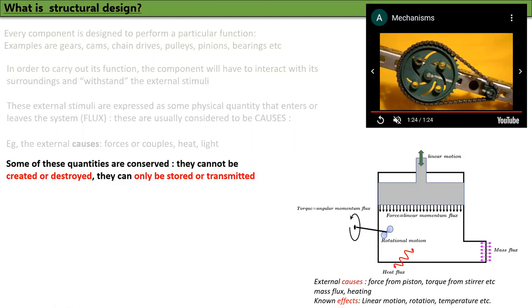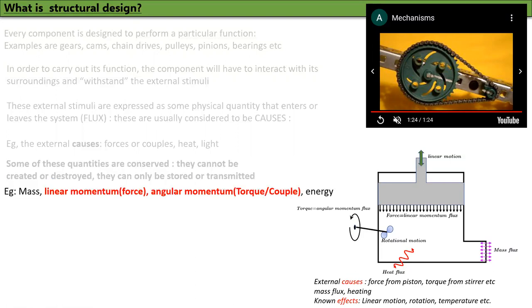Some of these quantities are conserved. They cannot be created or destroyed. They can only be stored or transmitted. Examples of conserved quantities are mass, linear momentum which gets translated into forces, angular momentum which is usually referred to as torque or couple, energy.